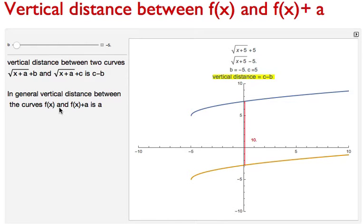In general, vertical distance between the curve f of x and f of x plus a is a. That is the value, the constant a.